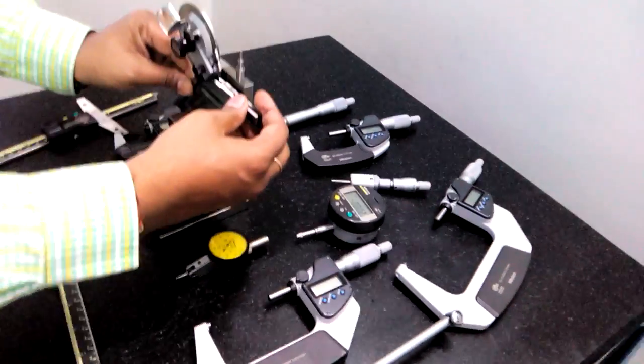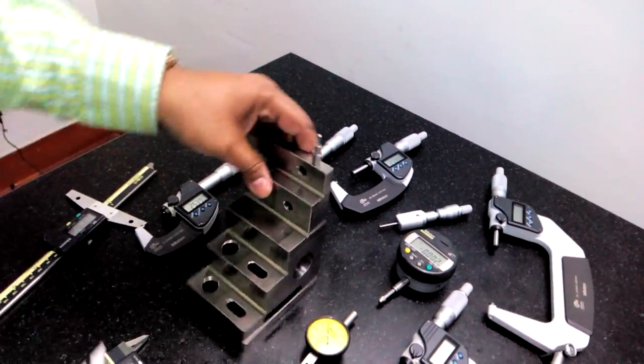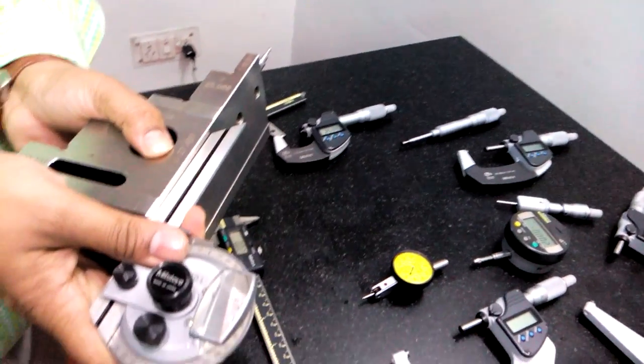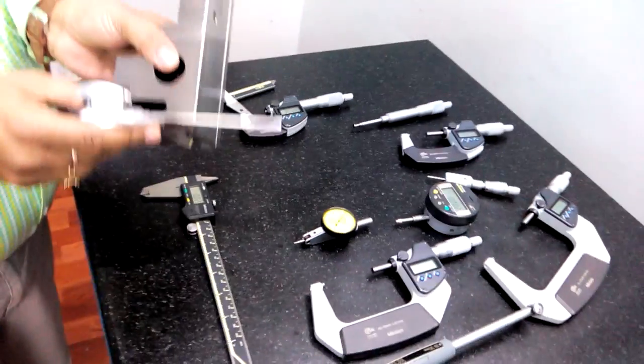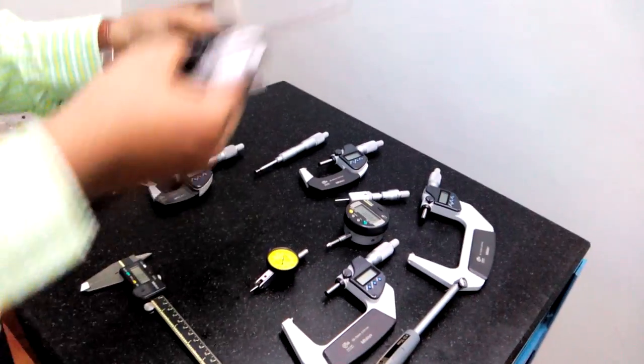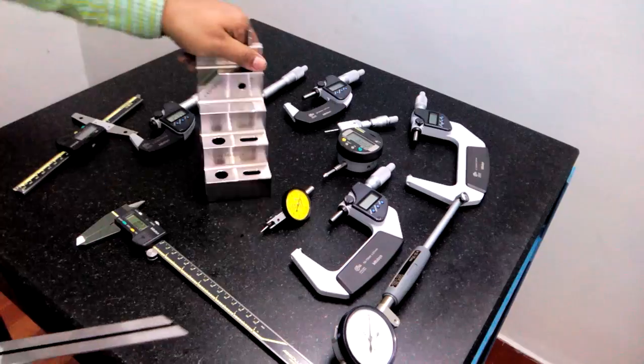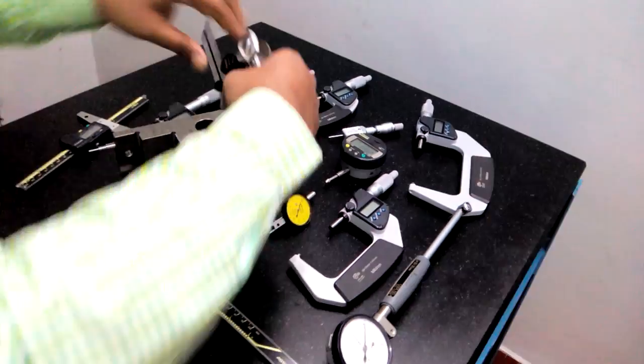For angles, you can use a bevel protector like this. You can use it for 90 degrees or 180 degrees, so one can use and develop their skill.